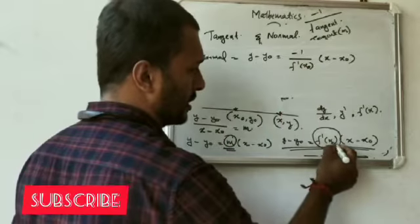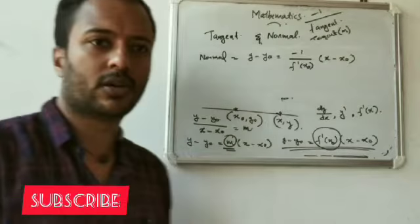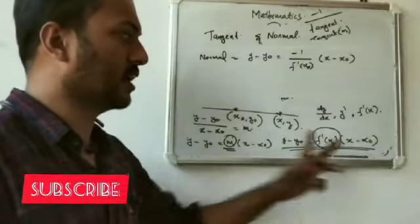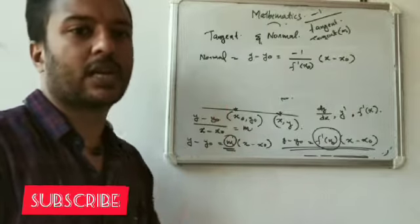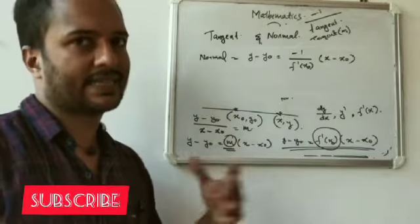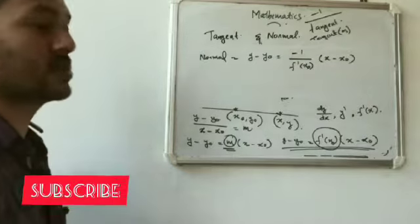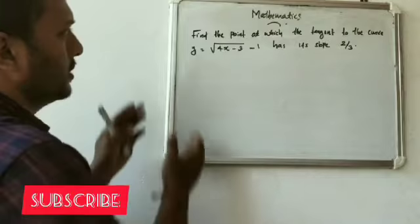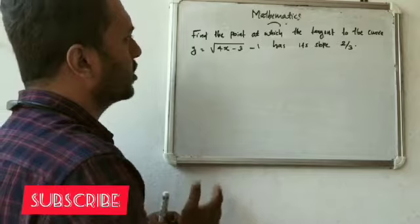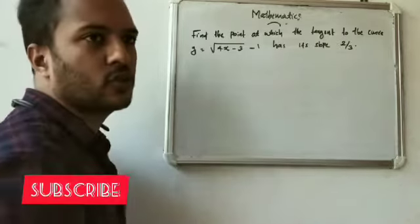At point x0, substitute f dash of x0. Choose a point. Find the point at which the tangent to the curve y is equal to root of 4x minus 3 minus 1 has its slope 2 by 3.